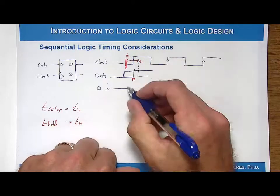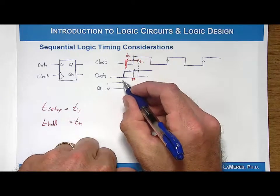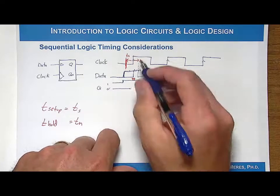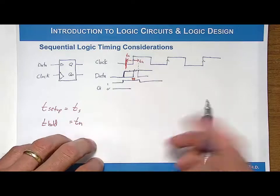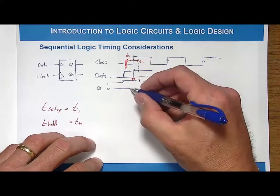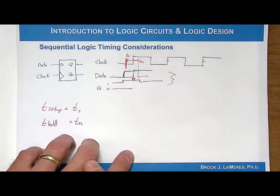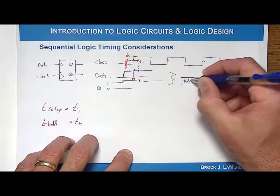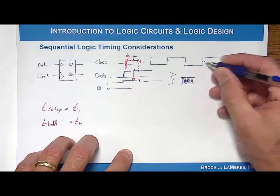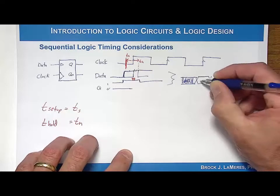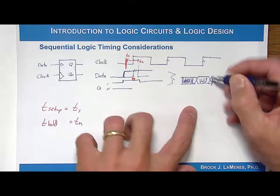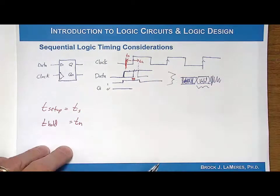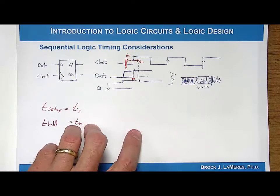If I redrew the data, it would have to change no closer to the clock than T_setup, and then it would have to stay there at least one T_hold longer than when the rising edge occurred. So if you met those requirements, Q would be updated appropriately. A lot of times when you draw the graphic of this, you say the data is changing right here, and then around the clock edge it has to be valid, and then it can start changing again. This data valid window around the clock is comprised of the setup and hold specifications of the D flip-flop.